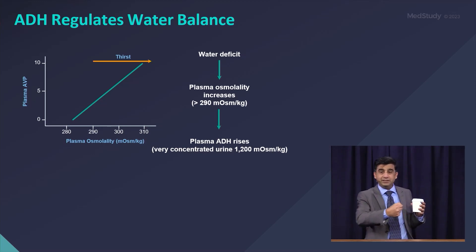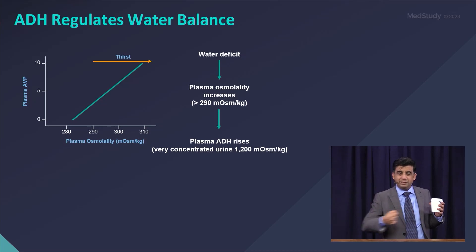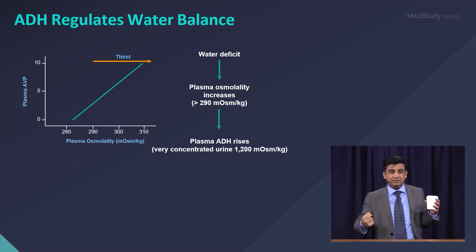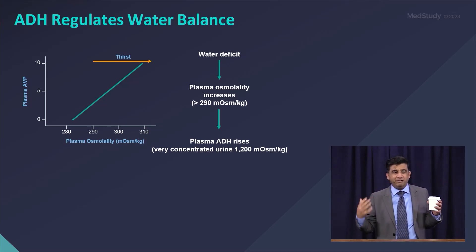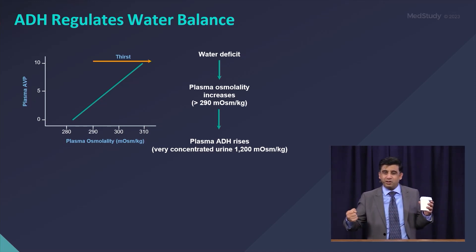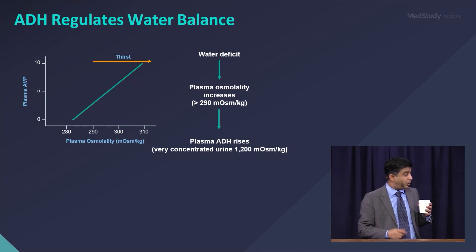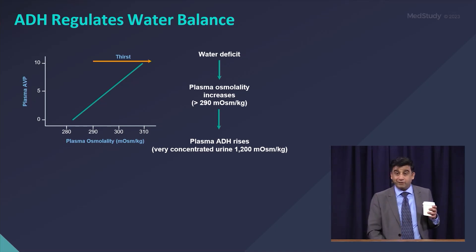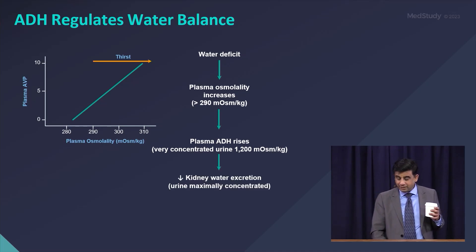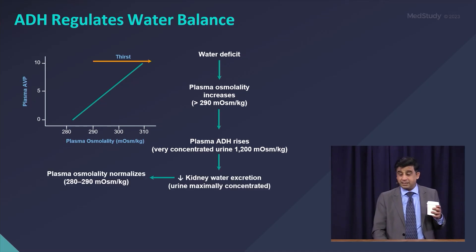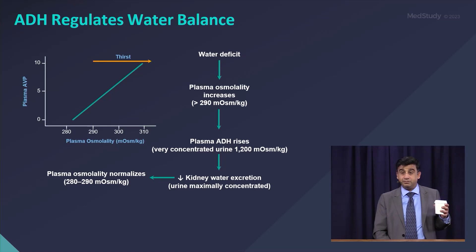And what is your kidney going to do? ADH is going to be very high, pulling out all the water, and your urine is going to be that dark yellow — a urine osmolality of 1200 milliosmoles.